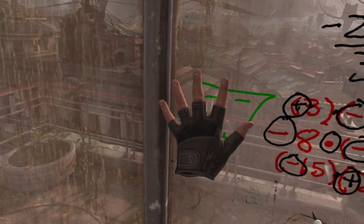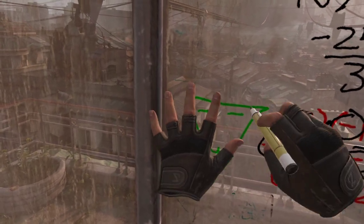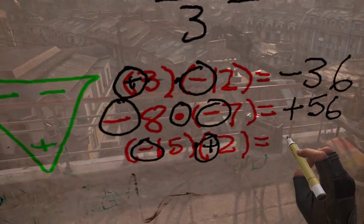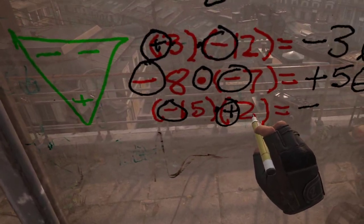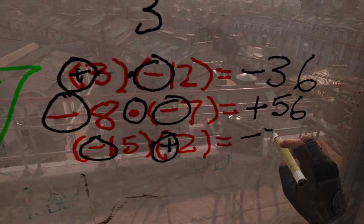Cover those up, what's left? A negative right there. So the answer is negative. 15 times 2, that's 30. Answer is negative 30.